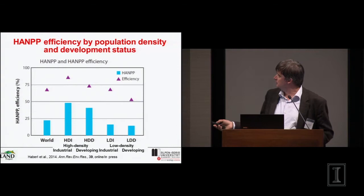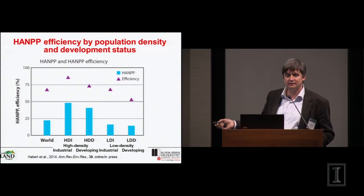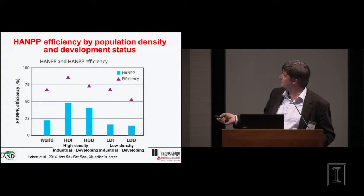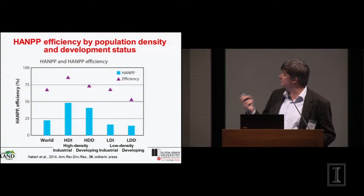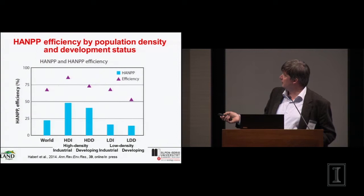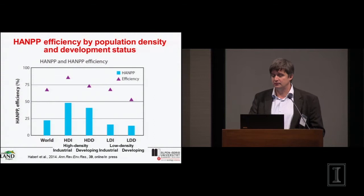There are also differences between world regions — high density industrialized, high density developing, low density industrialized, low density developing. In low density regions, HANPP is much lower in terms of the productivity potential of the region, whereas it's much higher in high density regions. But efficiency is also much lower in low density regions, so there is evidence that efficiency could be raised in these areas.